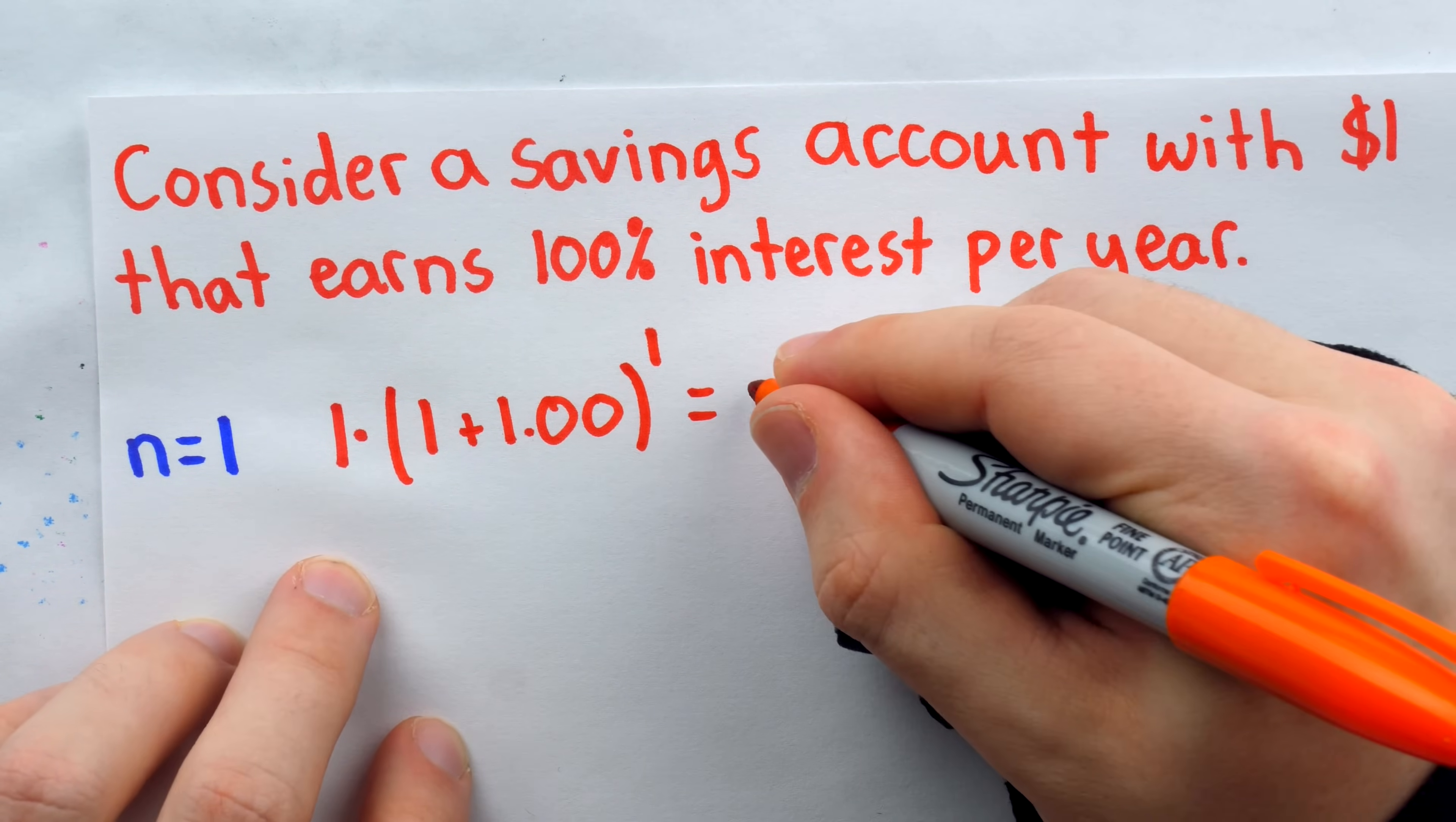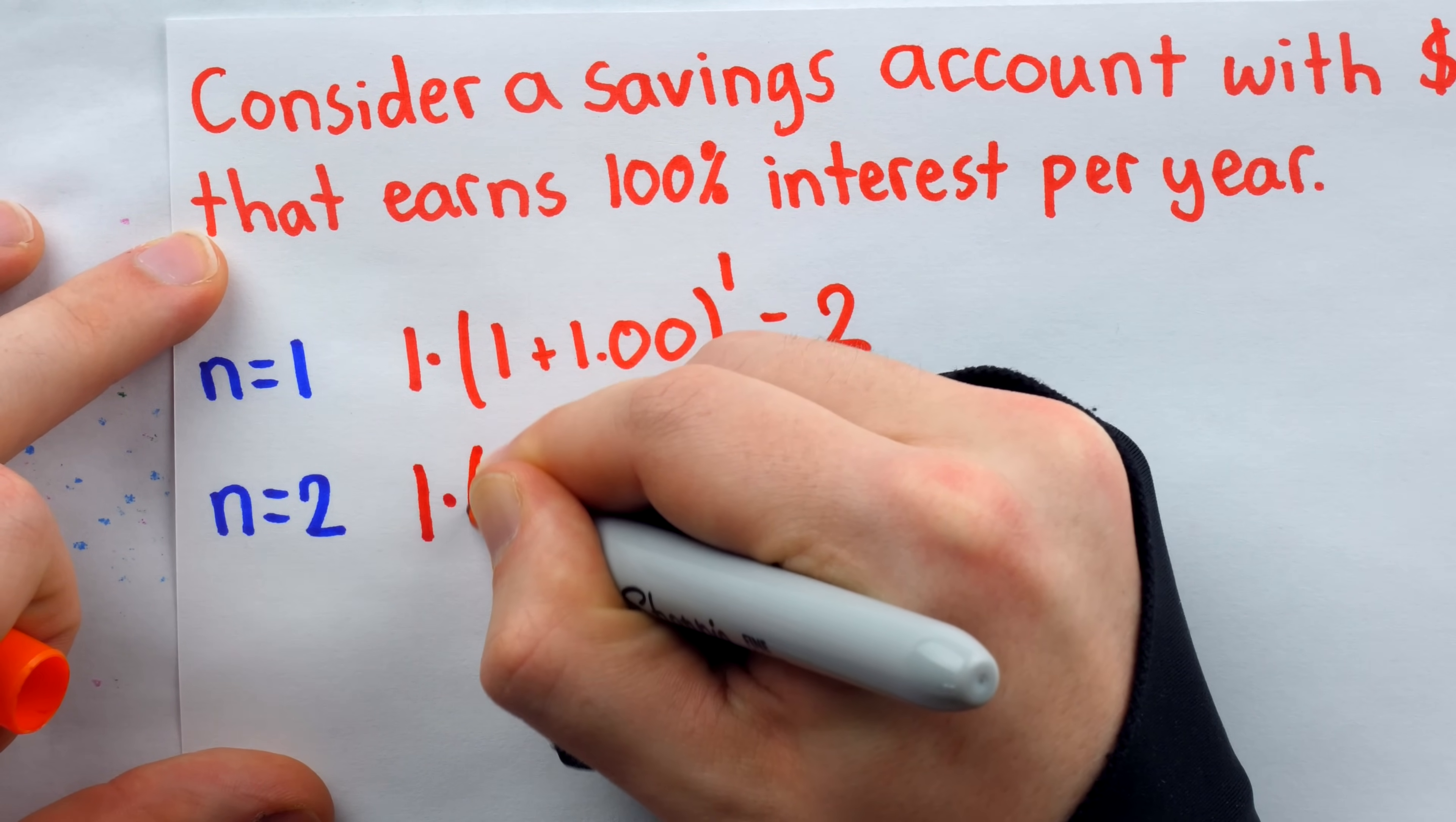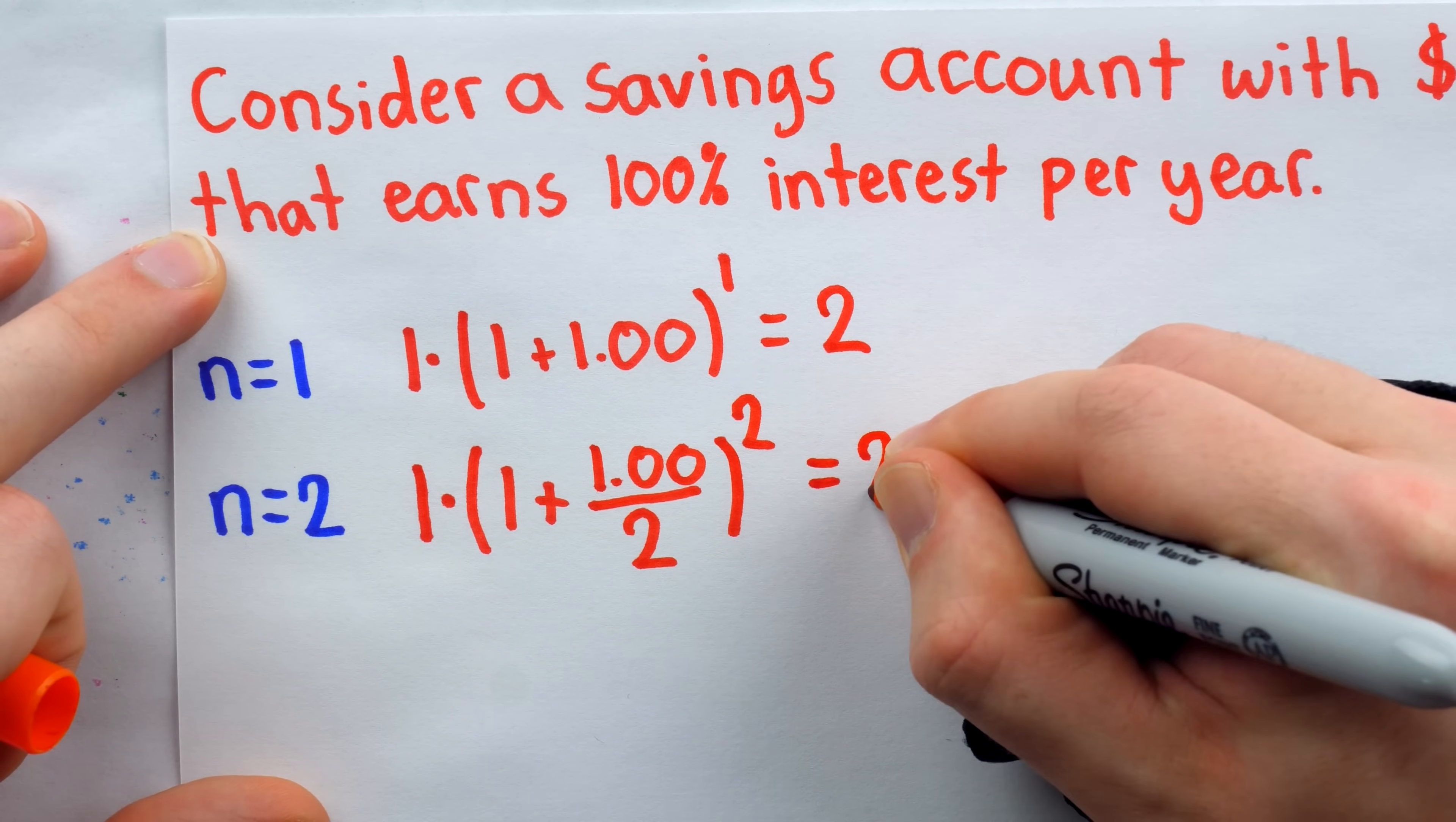There's that original $1 and then it's getting multiplied by 1, that just preserves that original amount, 1 times 1 is 1, plus the 100% interest. And since interest was compounded once over the course of that 1 year, it would be raised to the power of 1. This is 1 times 1 plus 1 or 2. So in this calculation, this is the original $1, this is preserving that original amount, this is the interest, and this is the number of times it was compounded. Now, this calculation changes a bit if n is 2 and we're compounding interest semi-annually. In this case, after 1 year, the amount in the account looks like this. There's the original $1 multiplied by 1 to preserve that original amount.